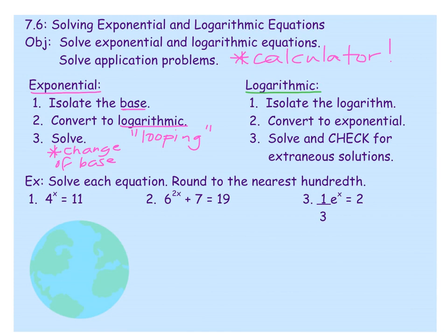Let's start with these three examples. Solve each equation, round to the nearest hundredth. In question one, 4 to the x power equals 11. We can't use our power chart because 4 and 11 have no connection there. Step one: isolate your base. The base is 4, so it's already isolated — that's done for us.